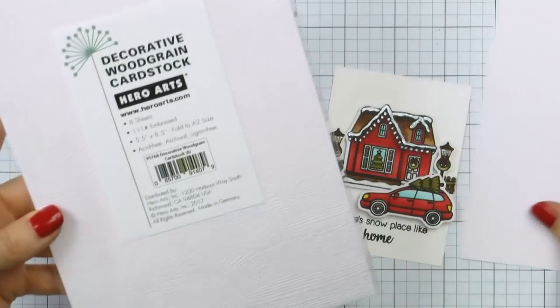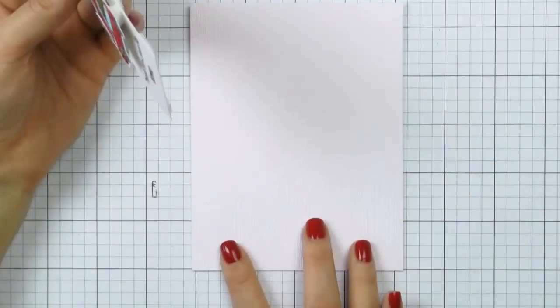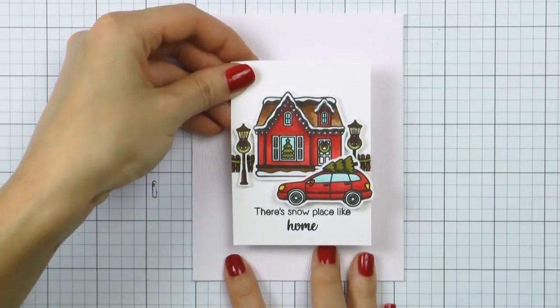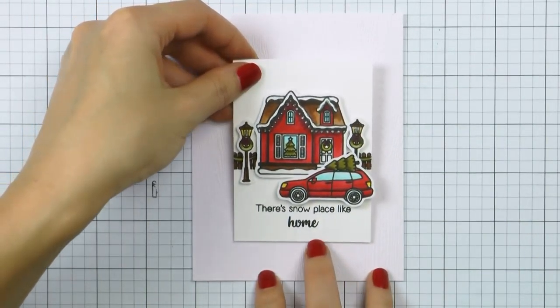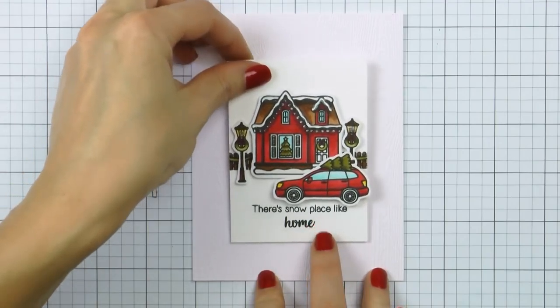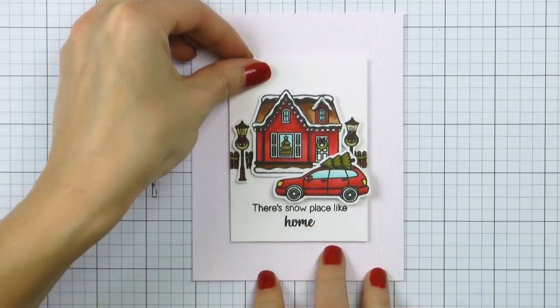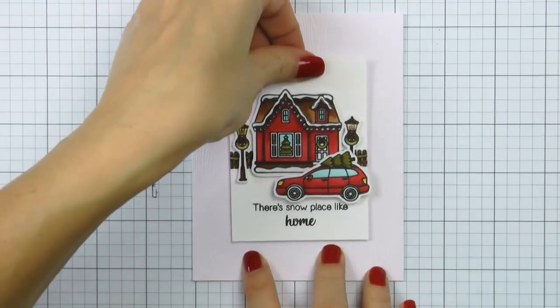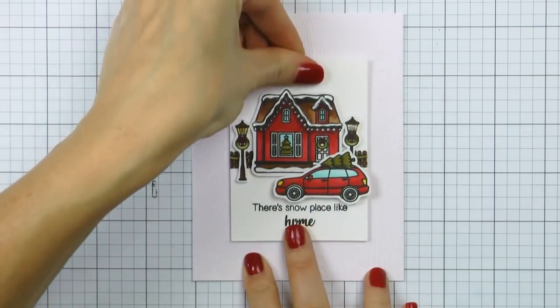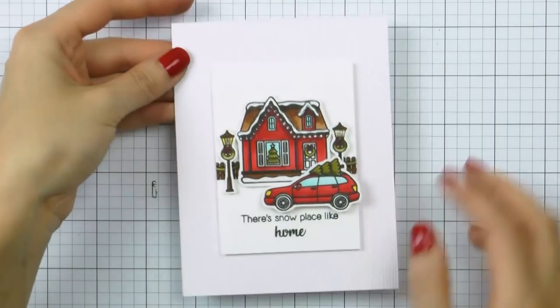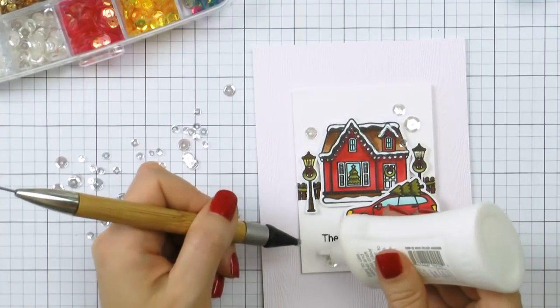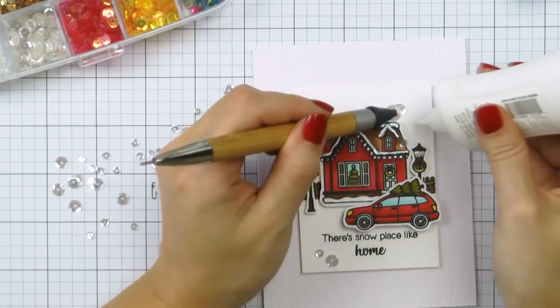I used Hero Arts white woodgrain cardstock and covered the front of an A2 card with this paper. I adore this cardstock and I use loads of it. It simply is perfect and adds enough texture to clean and simple cards. Finally I foam mounted my scene panel on top and added sparkling clear sequins from Pretty Pink Posh to embellish my card.